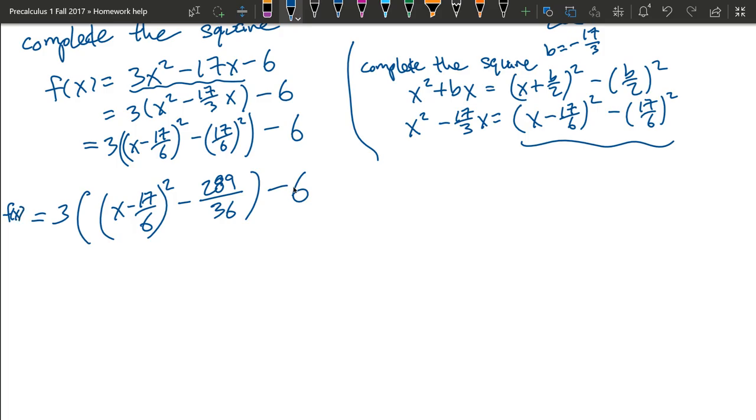And we want to now find the x-intercept. And what that means is y equals 0. Before we found the y-intercept, which meant x equals 0, that was far easier. Now y equals 0. And let's distribute our 3 across here. So we have 3 times x minus 17 sixths. 3 times all this stuff will be negative 289 over 12. And we still have our minus 6 hanging out.